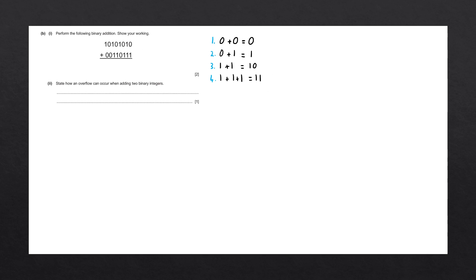So let's start on the right-hand side and add each bit. Starting off, we have 0 plus 1 — that is our second rule, so we get the result 1. Next, we have 1 plus 1, that is the third rule. Whenever we have two bits as our answer, we're going to write down the right-hand side bit, so we write down 0, and we're going to call this left bit the carry bit. So we carry it over to our next number and write down 1 above it.